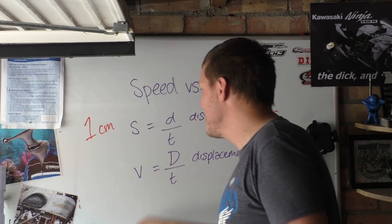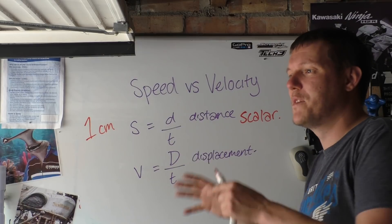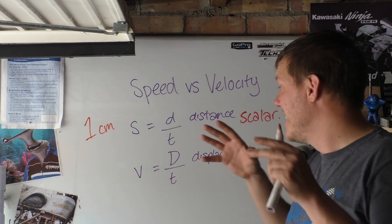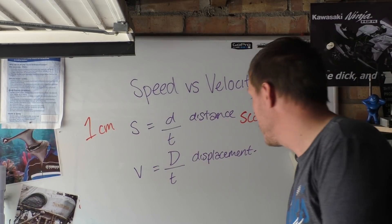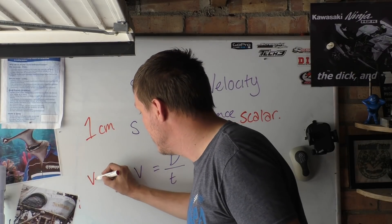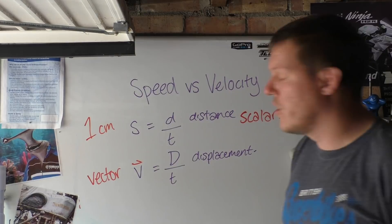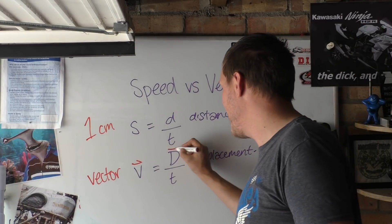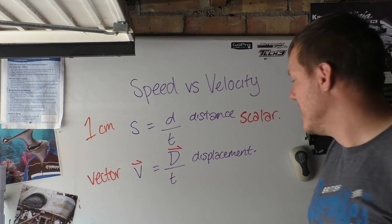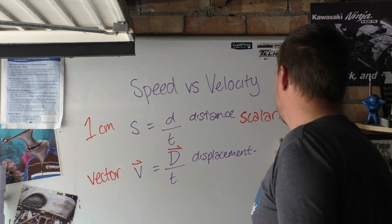You can have one centimeter in any direction you want, you can just wave one centimeter or a meter wherever you want. There is no, or there doesn't have to be attached to that a direction or what we call a vector, which is what velocity is. Velocities have to have the vectors and so do the displacements, if we're going to get geeky about it.